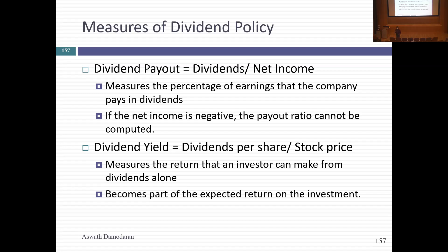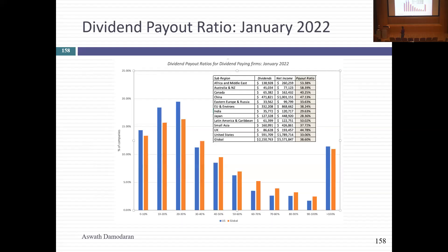It's important to have perspective on these numbers. If your company has a payout ratio of 37%, is that high or typical? Looking at dividend payout ratios globally among dividend-paying companies: if you ask what the median payout ratio is, it's probably around 30–35%. But there's an interesting quirk — a fairly large percentage of companies pay out more than 100% of their earnings as dividends.